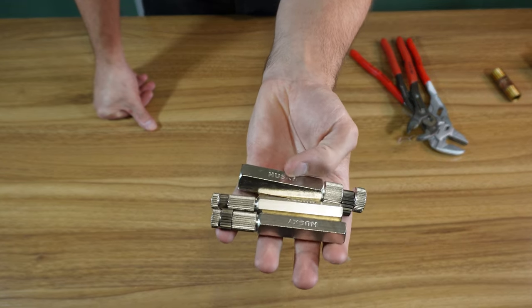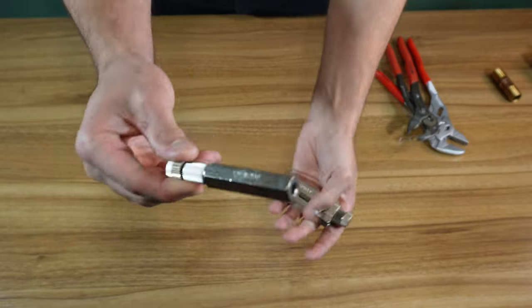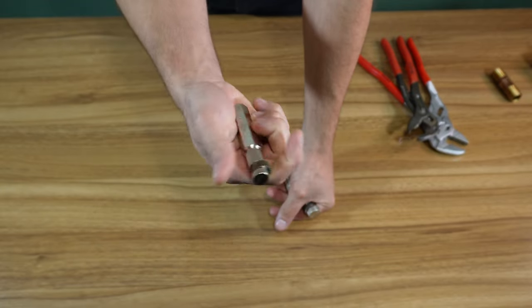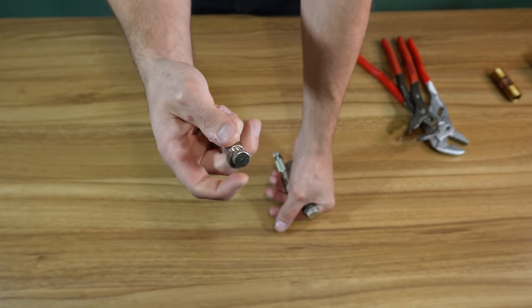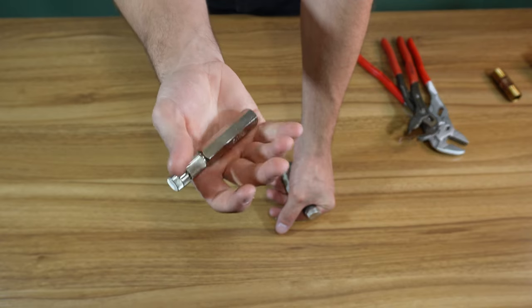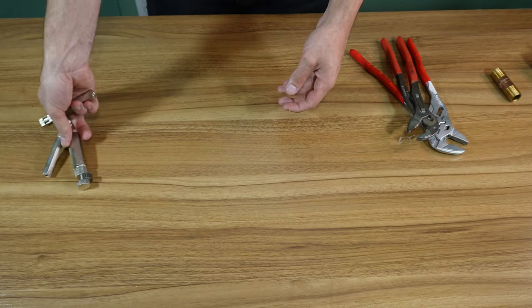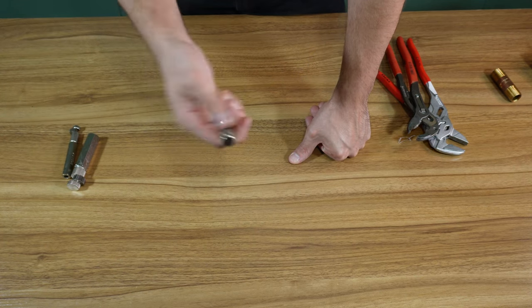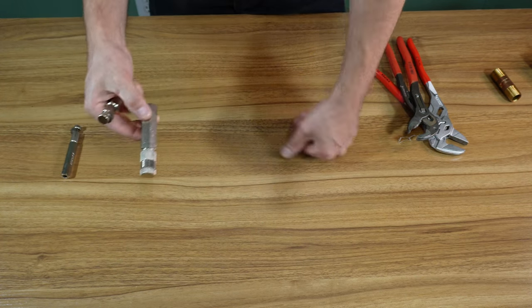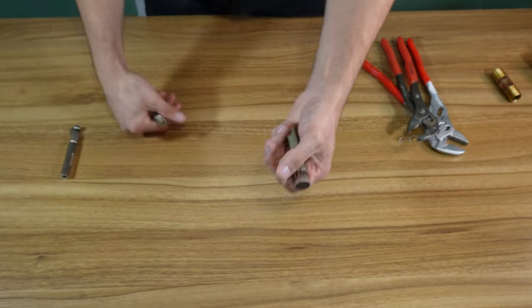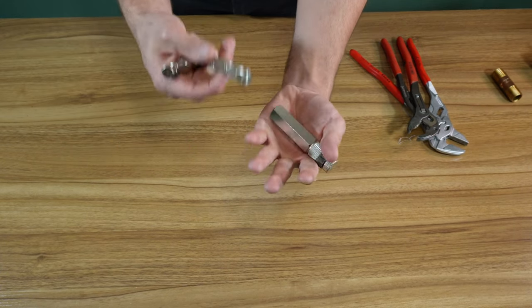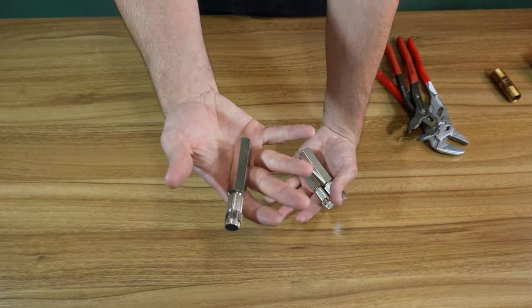Basically what I'm going to be using these for is mostly the half-inch one. It's for pulling nipples out of walls like behind in tubs. That's mostly my thought process in getting them. It'll be good to have. Comes with a three-eighths, three-quarter and half-inch.